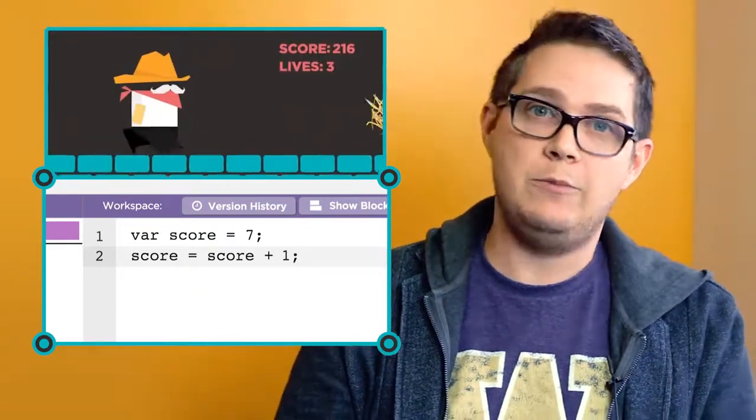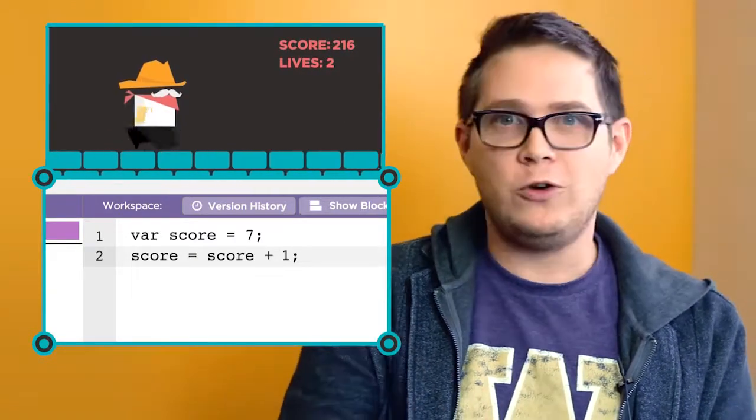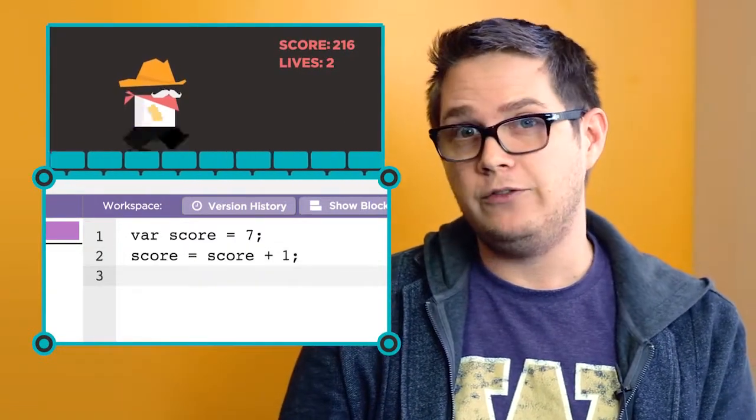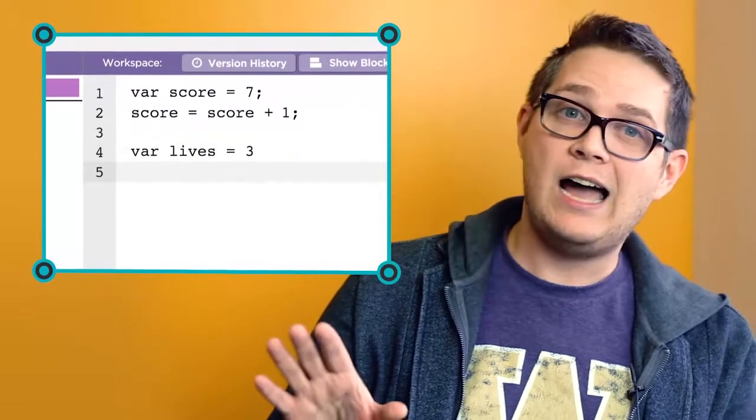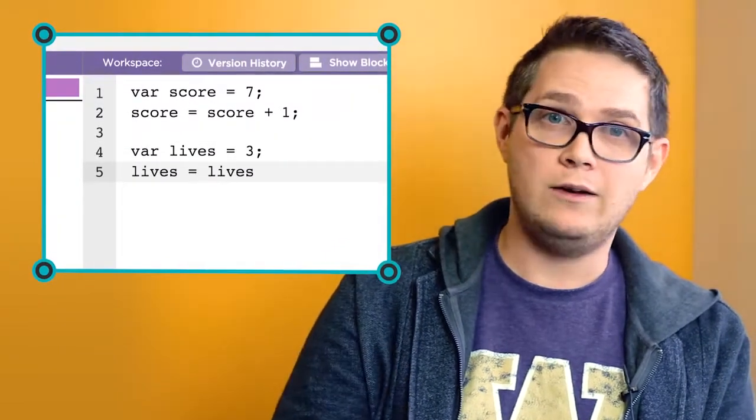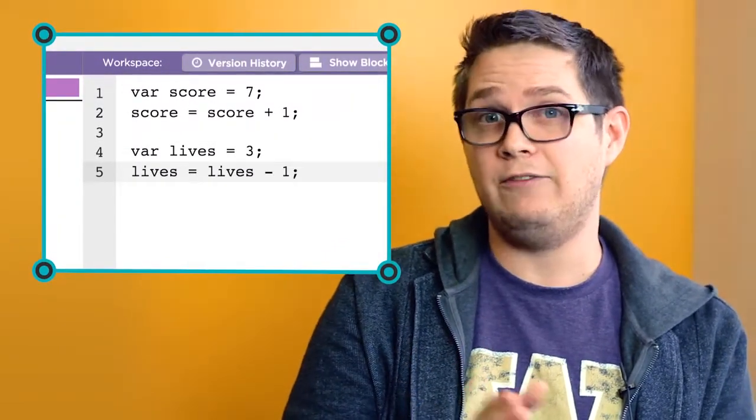Similarly, in our game, if the player does something bad, we might want to reduce the number of lives by one. So that code would look like this. Lives equals lives minus one, or lives gets lives minus one.